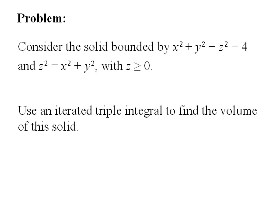Consider the solid bounded by x squared plus y squared plus z squared equals 4, and z squared equals x squared plus y squared, with z greater than or equal to 0. Use an iterated triple integral to find the volume of this solid.